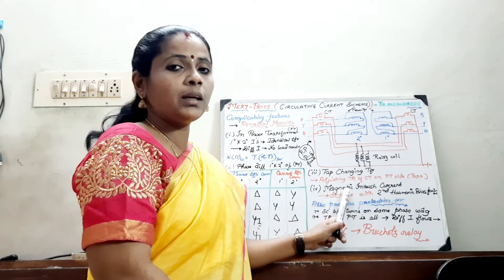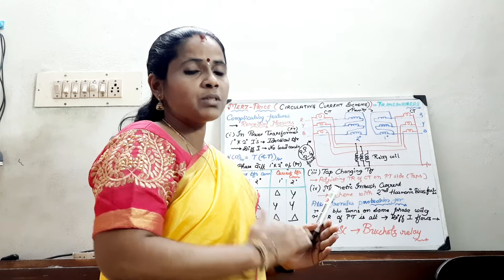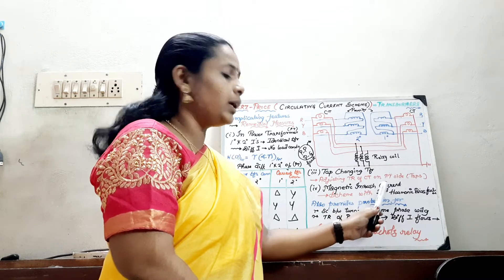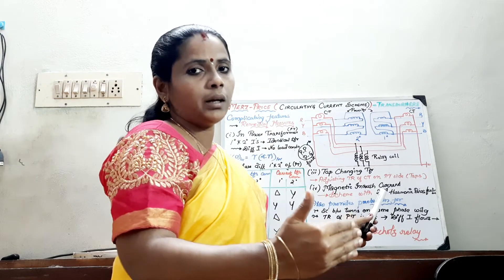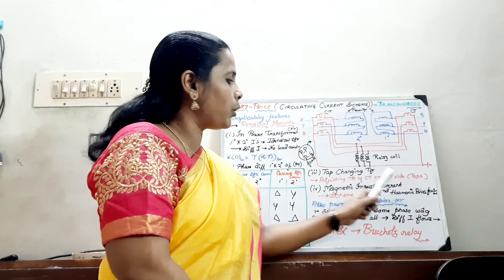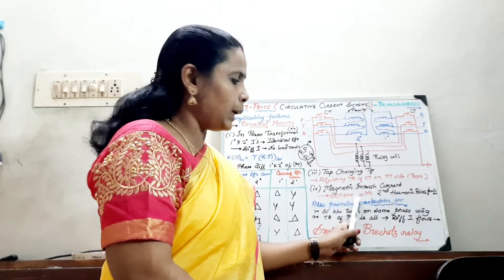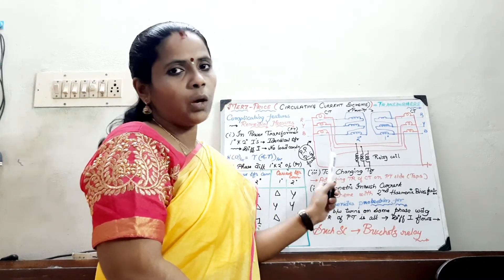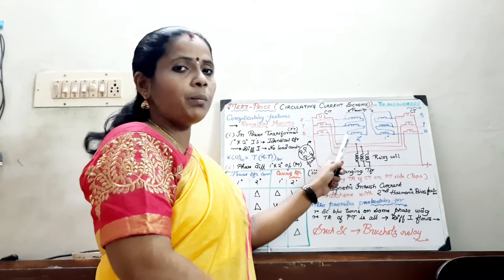The last problem encountered is the magnetic inrush problem. If a transformer has not been in service for a long period of time and is suddenly energized, it results in a magnetic inrush current — the incoming current alone will be of higher magnitude with no outgoing current. In this case, the magnetic inrush problem occurs, and mainly the second harmonic component will be more prominent. To overcome this, we have to devise a scheme that can restrain using the second harmonic bias feature, so that this problem will be avoided. Once all these measures are provided, the transformer protection will be ready.